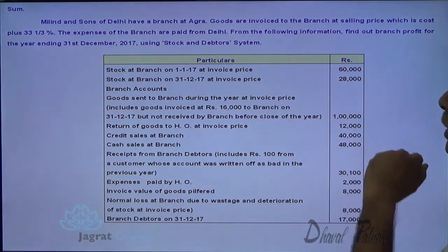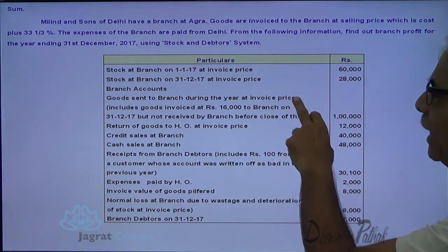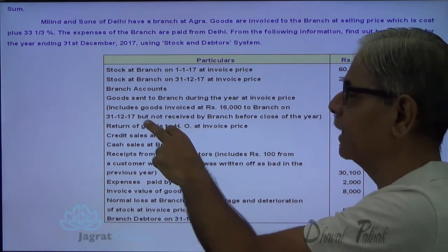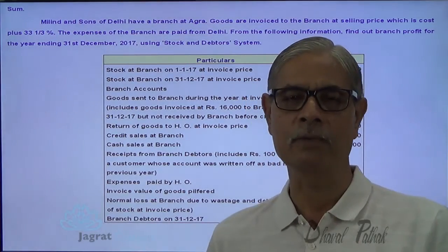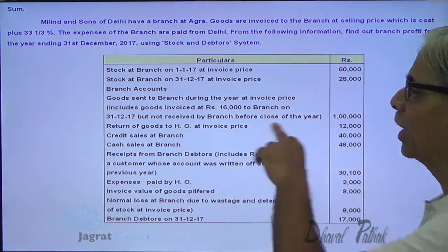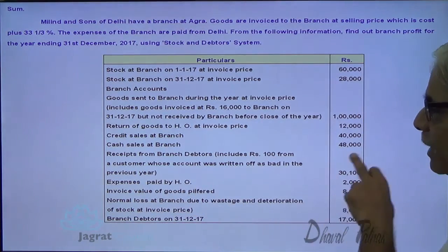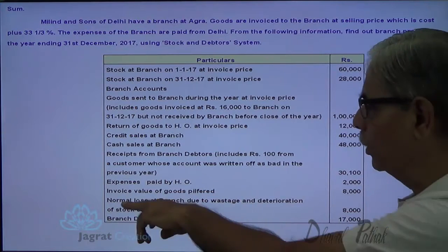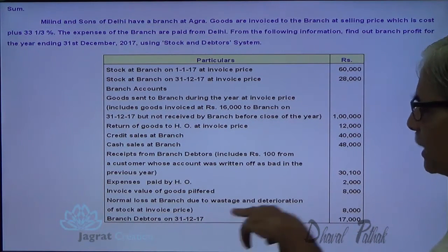Stock at branch on 1-1-2017 at invoice price; stock at branch at the end of the year at invoice price. Goods sent to branch during the year at invoice price 1 lakh, which includes goods invoiced at 16,000 sent on 31st December 2017 but not received by the branch — so it is goods in transit. Return of goods to HO, credit sales, cash sales, receipts from branch debtors including 100 from a customer whose account was written off as bad in the previous year, expenses paid by HO, invoice value of goods pilfered 8,000, and normal loss at branch due to wastage and deterioration in stock at invoice price also 8,000. Branch debtors balance on 31st December is 17,000.